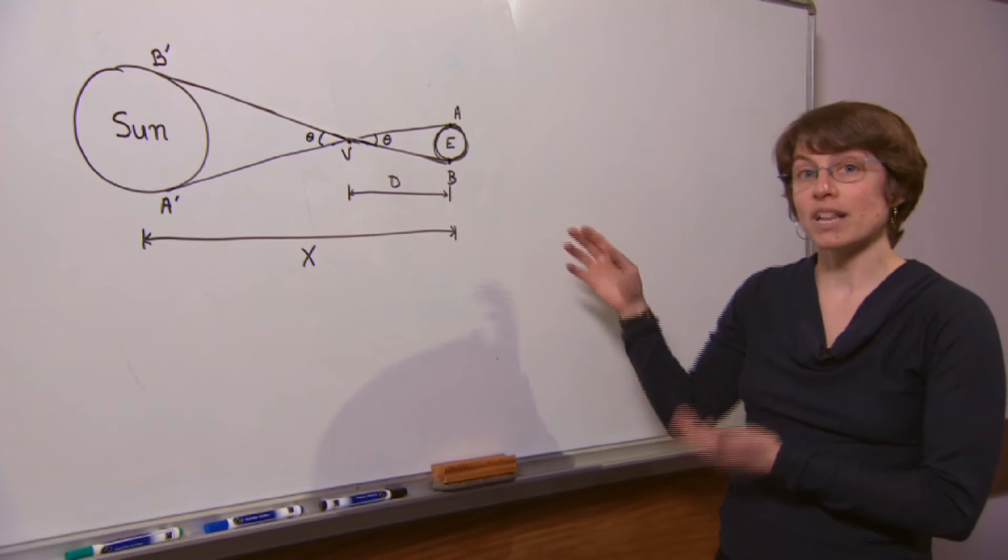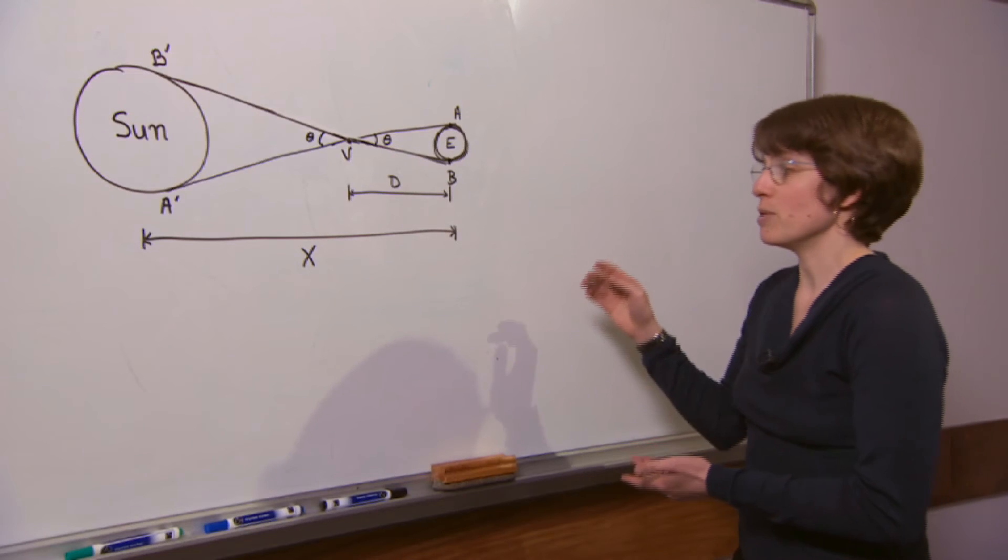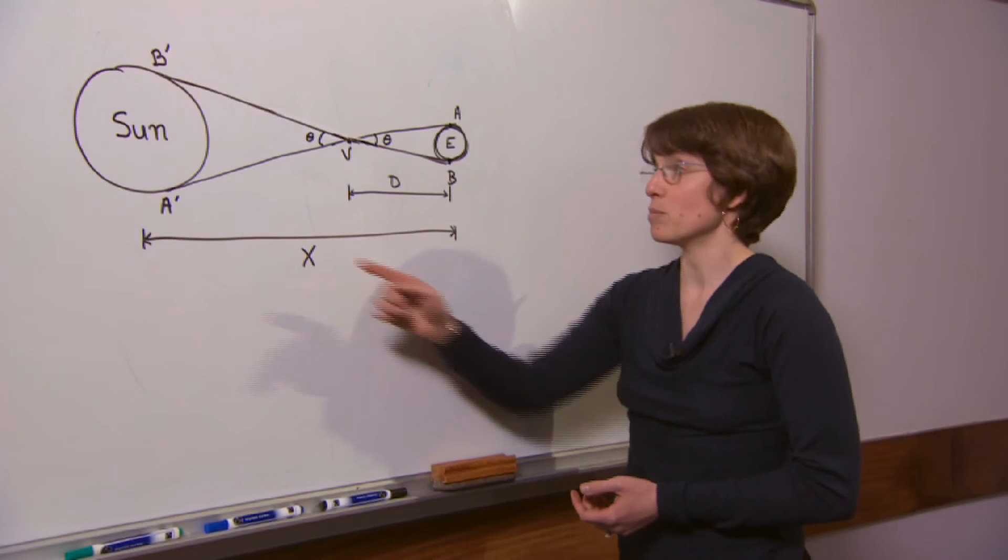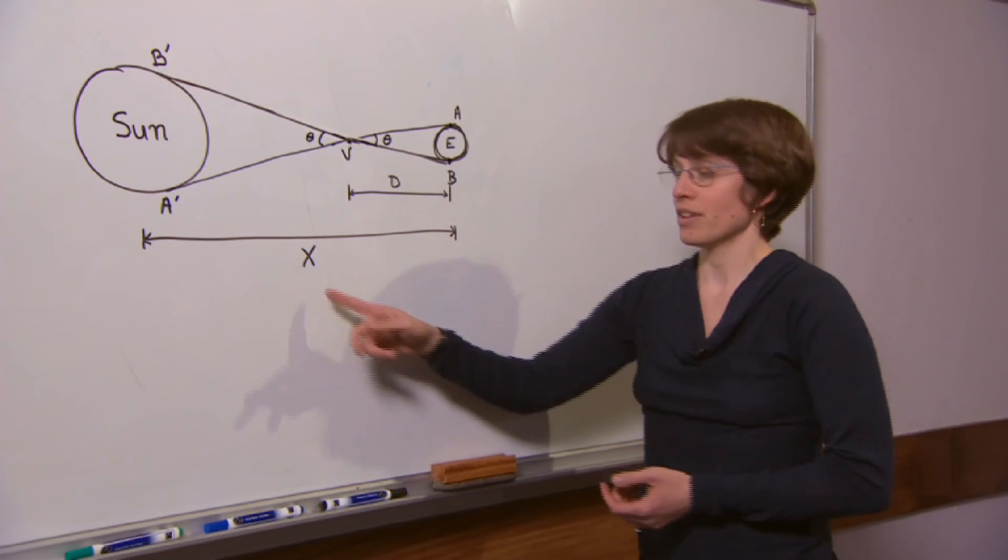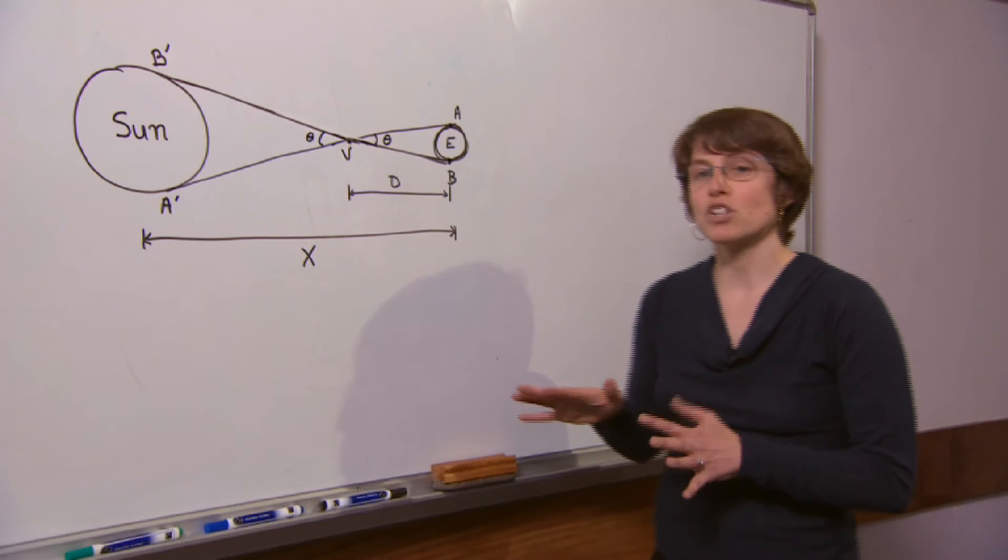Since they already knew the relative distances between all of the planets they would then be able to determine the distance between the Sun and the earth. I call that X. But it was a little bit trickier than that.